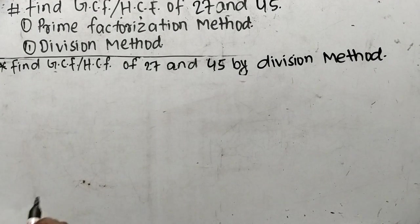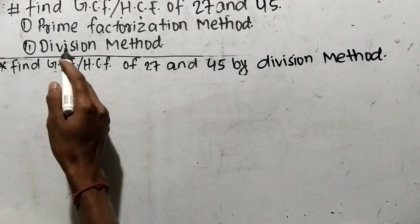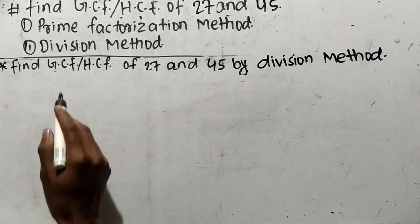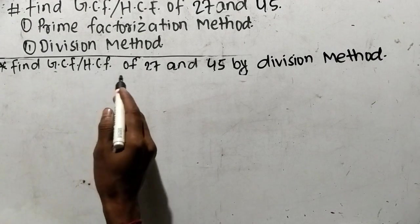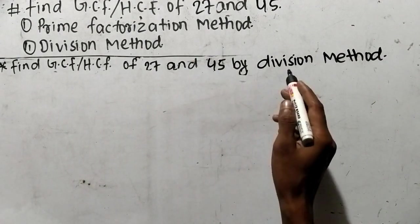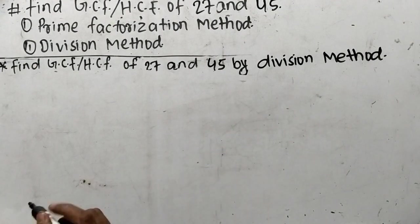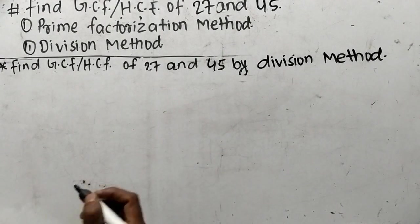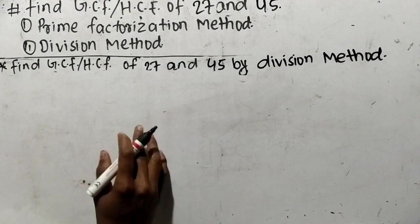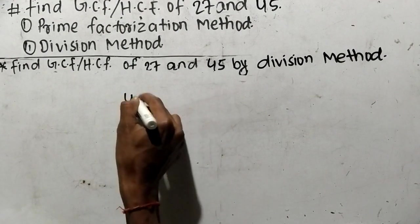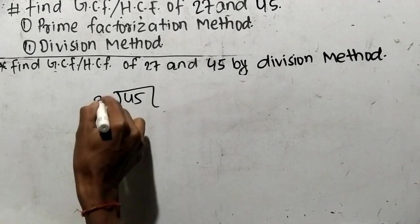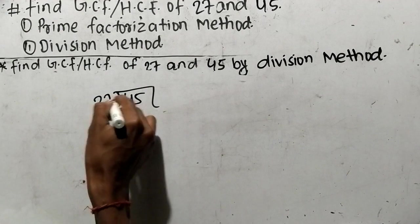Our second method is the division method. So let's find out GCF or HCF of 27 and 45 by division method. While finding out GCF by division method, we have to divide the greater number, which is 45, by the lesser number, which is 27.